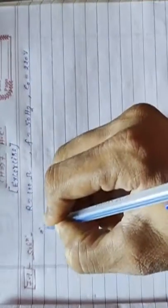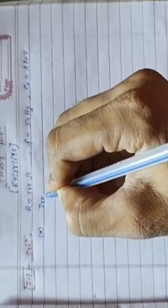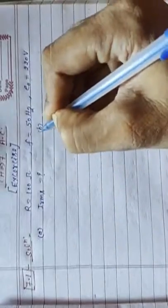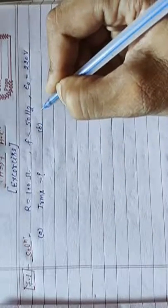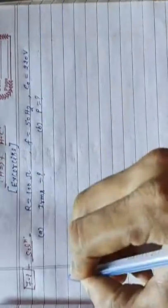We find out in part A, I RMS current, and part B, power consumed. Solution: